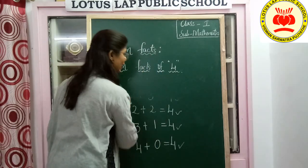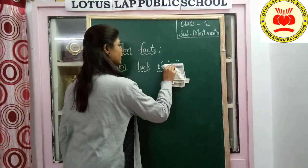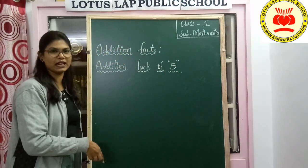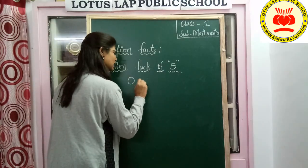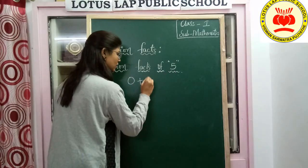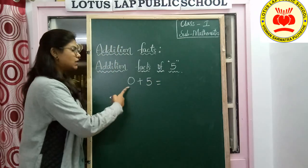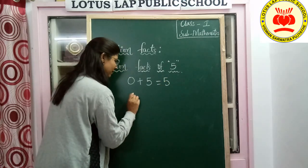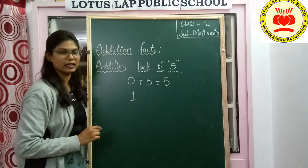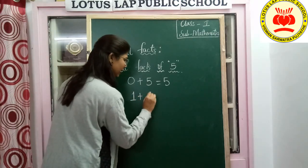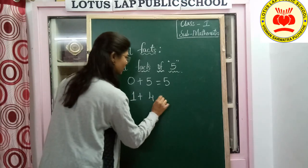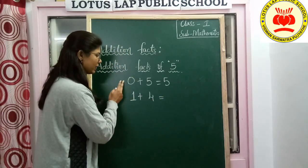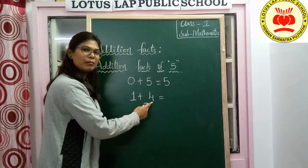Now let's check with 5. Here we are going to find addition facts of 5. The same procedure we have to follow. 0 plus 5 is 5. Now, after 0, which number do we have to take? 1. 1 plus — here we have to take 4. One more thing you can observe, children: here we are taking after numbers, and here the before numbers are repeating.